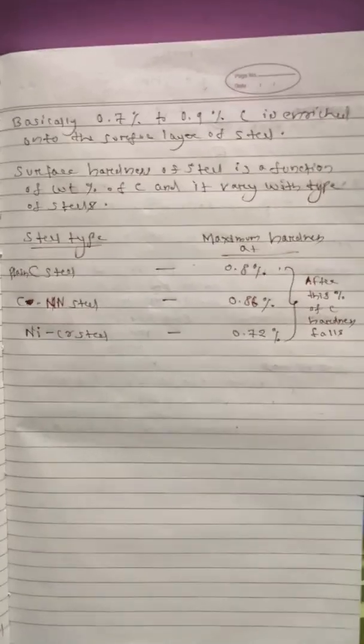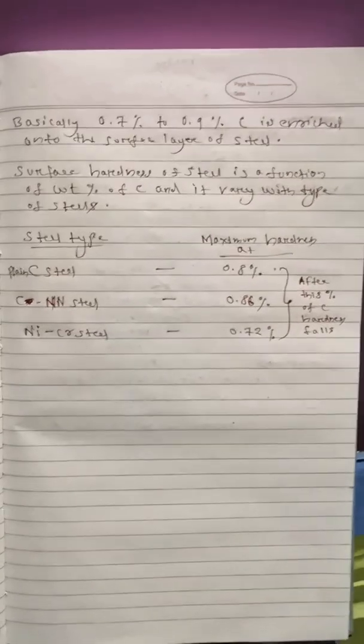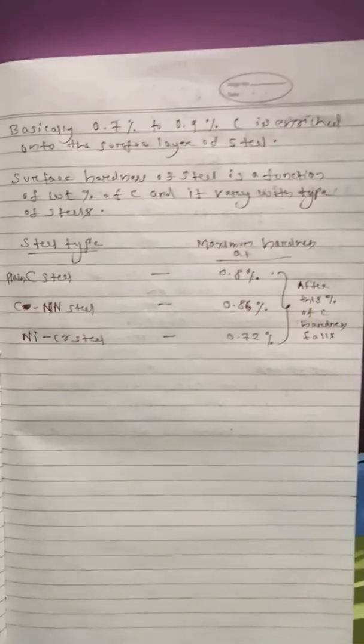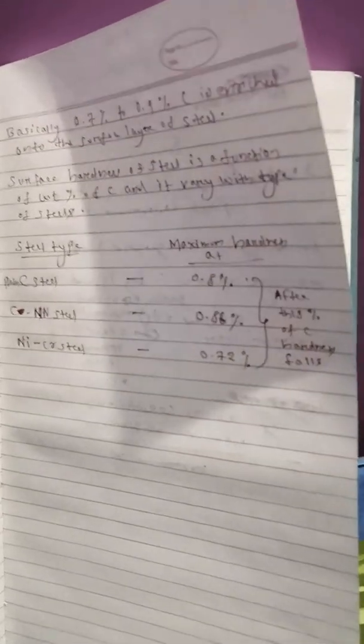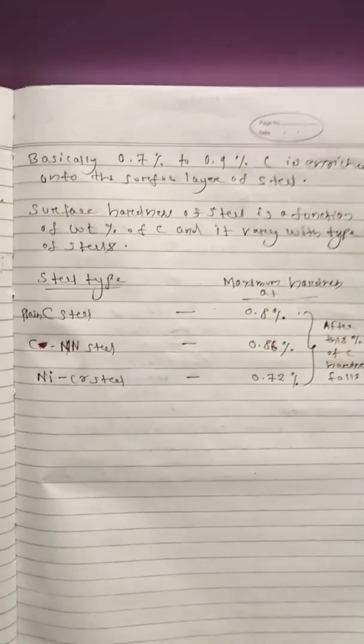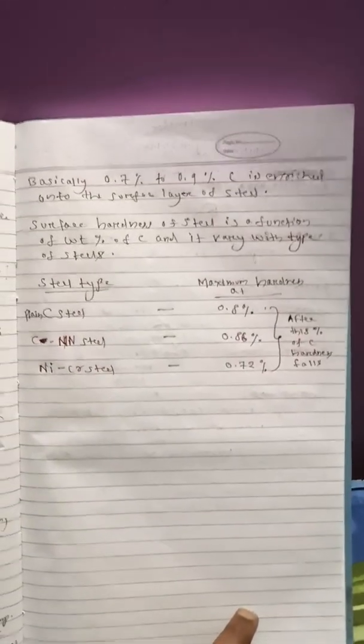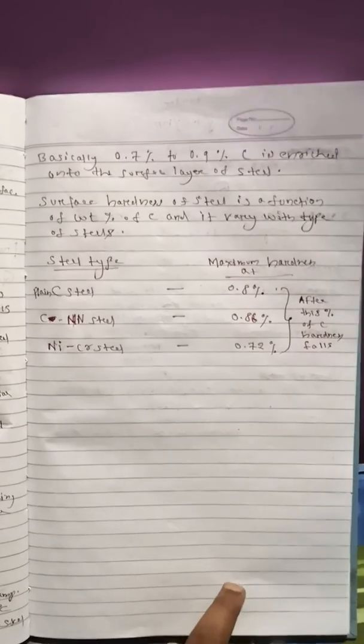Now the surface hardness of the steel is a function of weight percentage of carbon. Higher is the weight percentage of carbon, higher is the hardness, and it also varies with the type of steel we are dealing with.